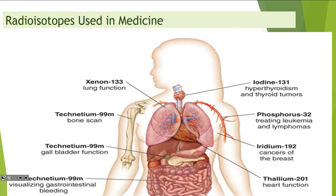Turn to the next page and write these down. Technetium actually has three different uses, so you only have to write technetium-99 once and then put bone scan, gallbladder, and gastrointestinal bleeding — it's the most commonly used one.